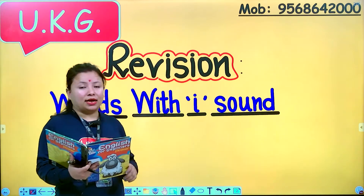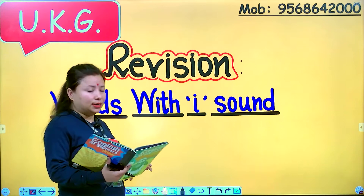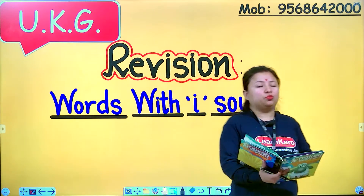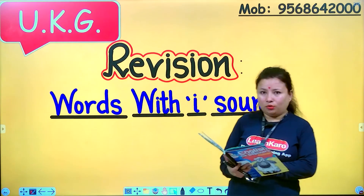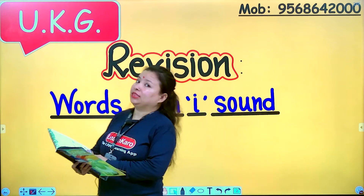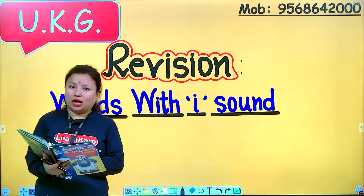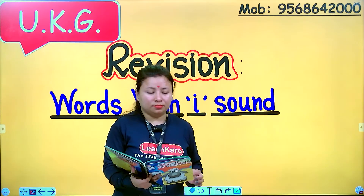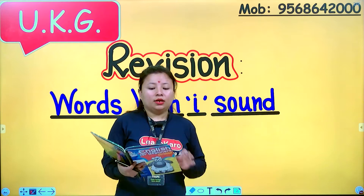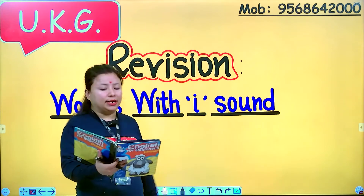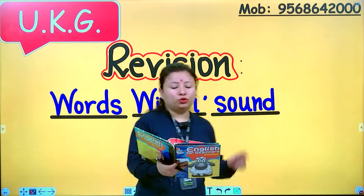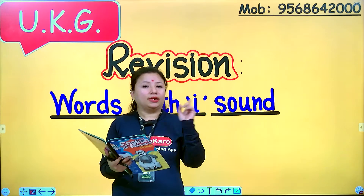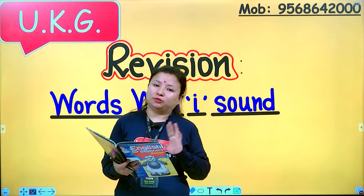In my last class we had learned and revised about words with A sound and words with E sound. So have you done your work? The words related to two vowels, that is A and E, has been done.